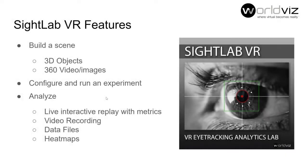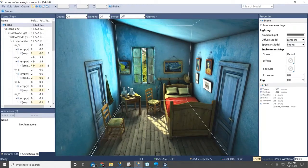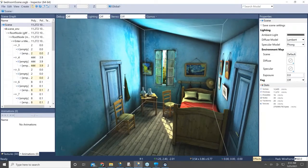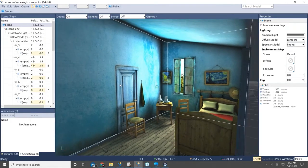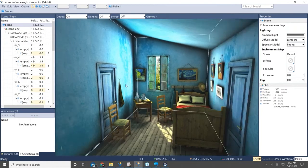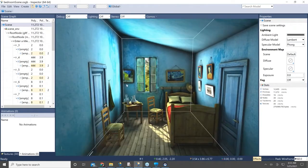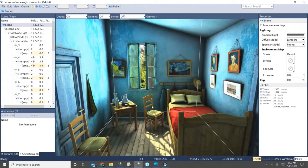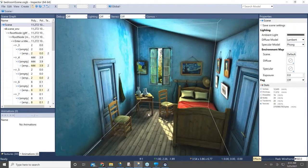First I'm going to show you how you can set up your scene and add some objects you will measure eye tracking data on. This is the part of the software where you can set up and modify your scene, called Inspector.